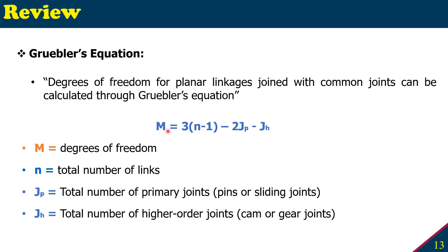For the 4-bar linkage, M would be the degree of freedom, N is the total number of links, JP is the total number of primary joints, which are pins or sliding joints, and JH would be the total number of higher order joints, such as having cams or gears.